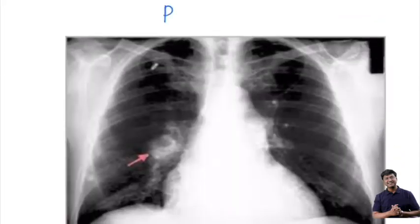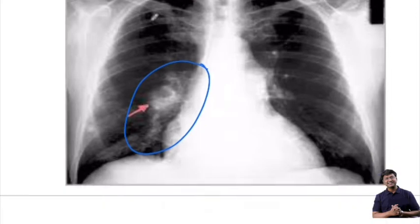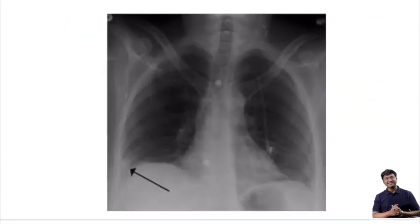The next important sign is the Palla's sign. What is Palla's sign? It is an enlarged or prominent right descending pulmonary artery, which can be seen on the X-ray.